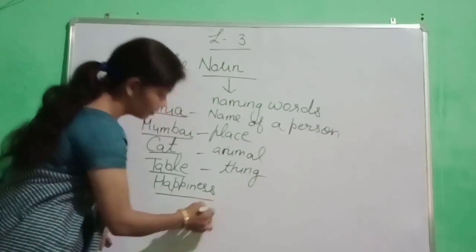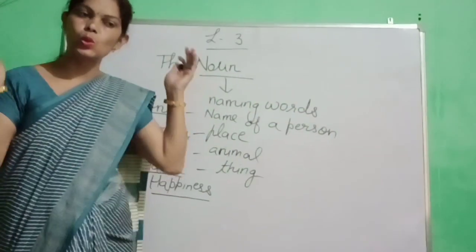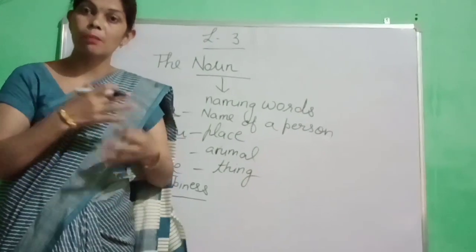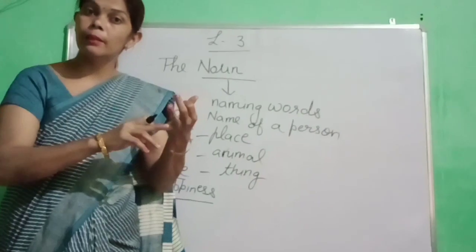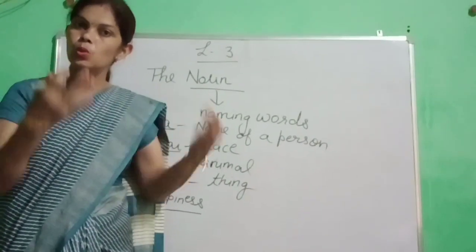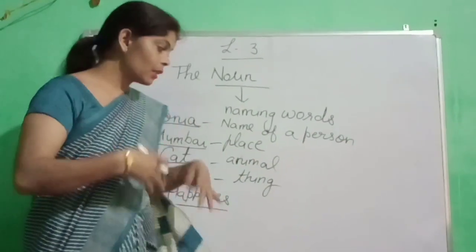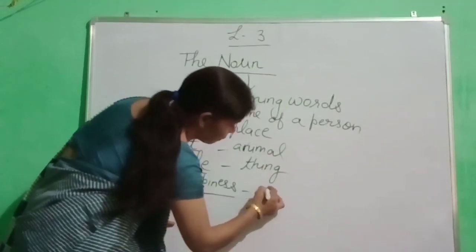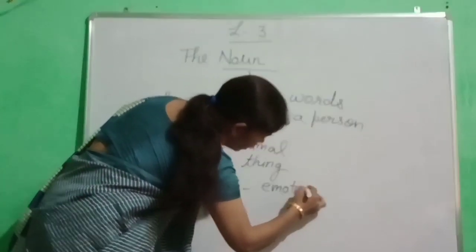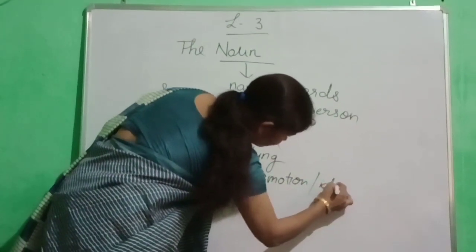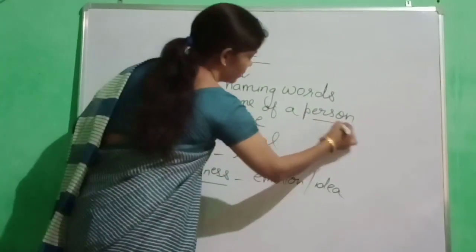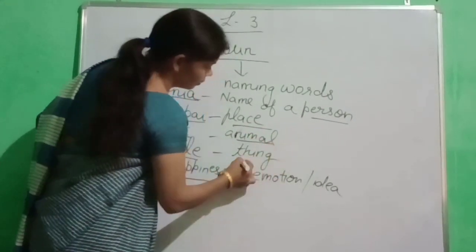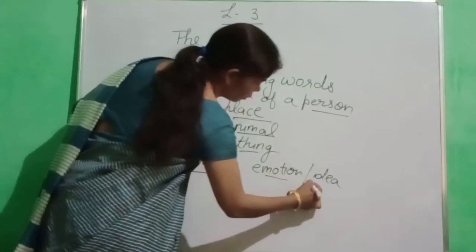And happiness — dear students, happiness kya hoti hai? Jo humara mind hota hai, jo humara jisme man hota hai — uske andar hamara happiness bhi hoti hai. Sorrow bhi hota hai, angry bhi hota hai. Jo bhi humari feelings hoti hain, just say happiness. Happiness bhi kya aapka? Emotion hai na? Emotion ya idea. So dear students: name of a person, place, animal, thing, emotion or idea.